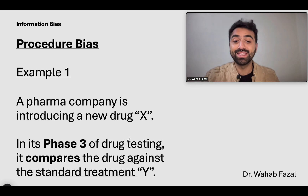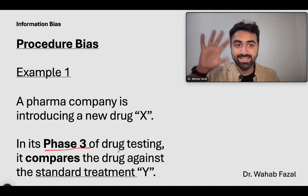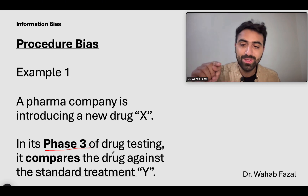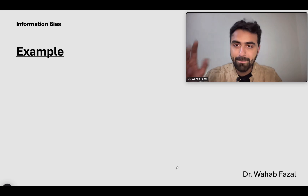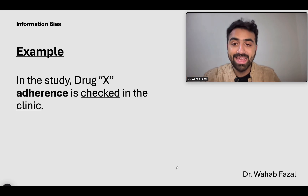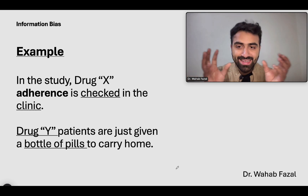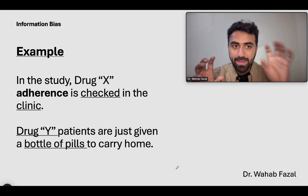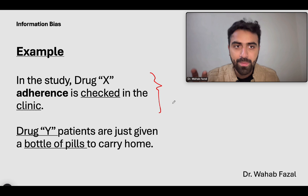The first example: a pharma company is introducing a new drug called X in phase three of drug testing, comparing it against the standard treatment Y. Drug X adherence is checked regularly in the clinic, but drug Y patients are just given a bottle of pills to carry home. One group is being treated differently from the other — the experimental group has their adherence checked regularly.